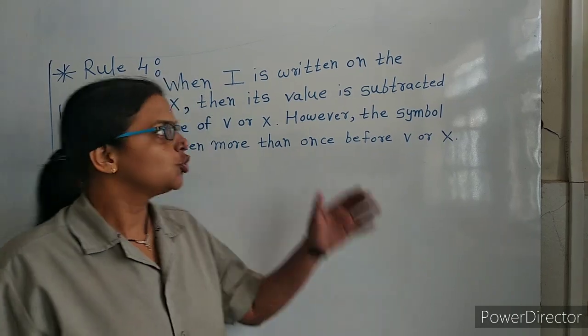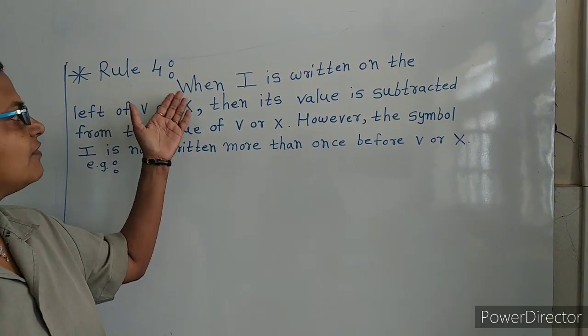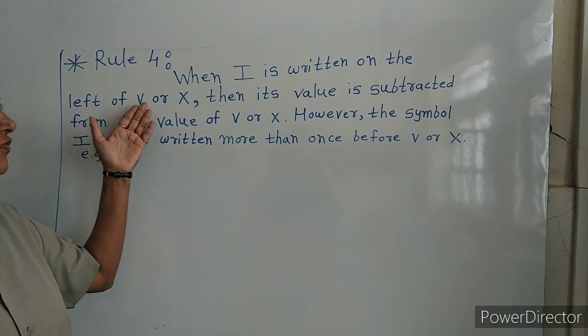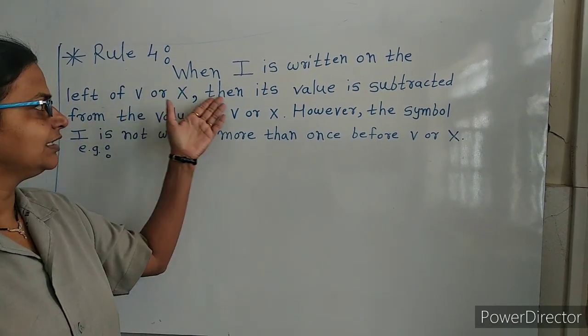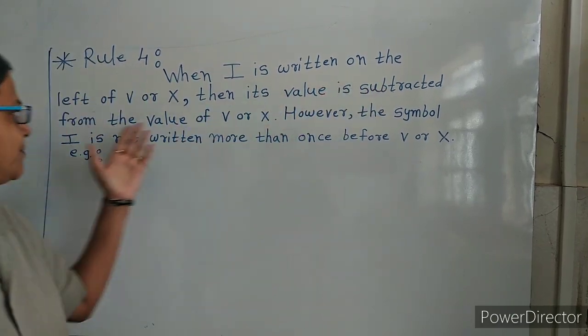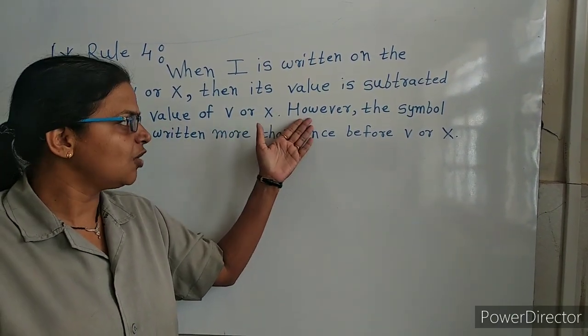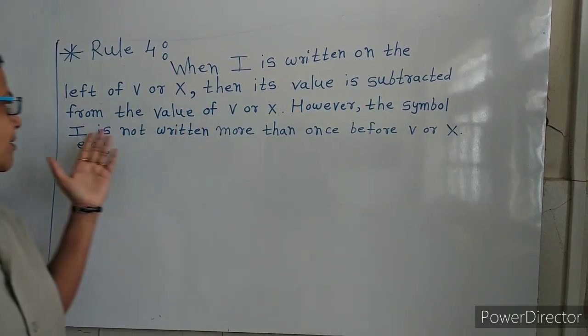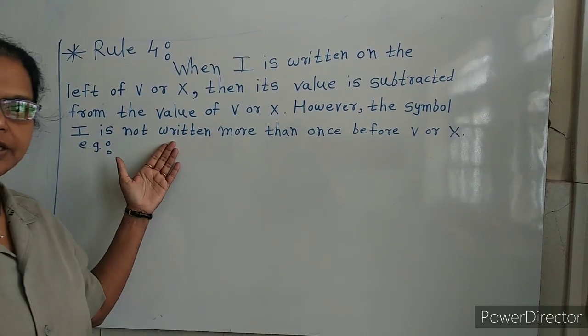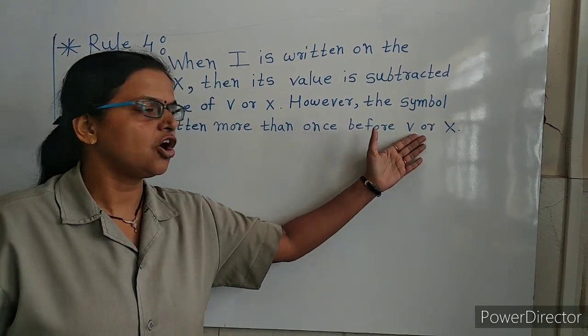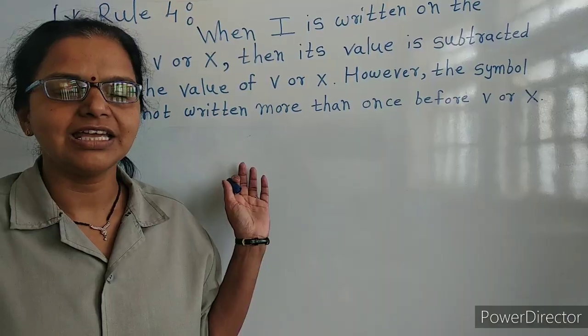We will learn Rule 4: When I is written on the left of V or X, then its value is subtracted from the value of V or X. However, the symbol I is not written more than once before V or X. For example: